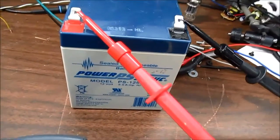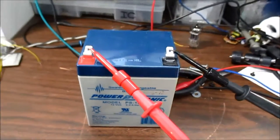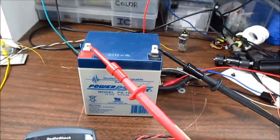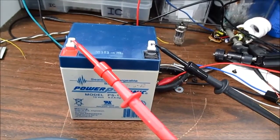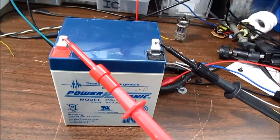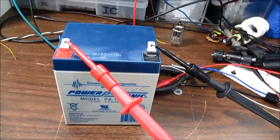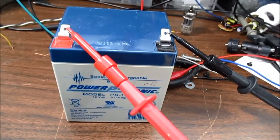But anyhow, I have this 12 volt 5 amp hour gel cell type battery. It is three years old and I should mention that the age of the battery, the state of charge, temperature, things like that will influence the source resistance measurement.